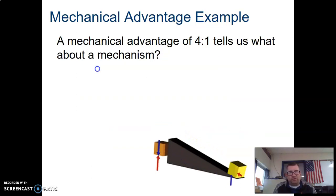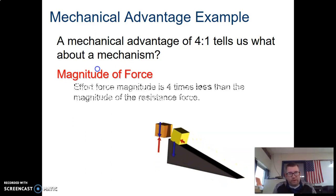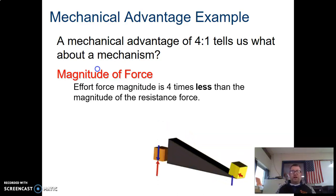In this example a mechanical advantage of four to one, what does this tell us about a mechanism? It tells us the magnitude of the force. It tells us that the effort force is four times less than the magnitude of the resistance force. So if I have a box in this case that weighs 400 pounds, if I have a mechanical advantage of four to one, I only have to apply 100 pounds of effort in order to move that 400 pounds of resistance.